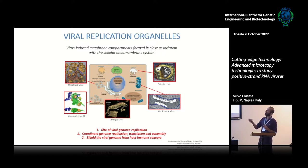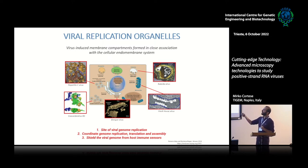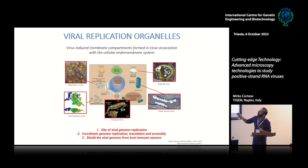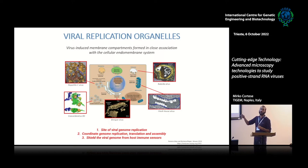Each virus has its own niche — a favorite place inside the cell to install its replication organelle. For instance, Flock House virus uses the mitochondrial membrane, Tombusvirus uses the peroxisome, and many human pathogens such as hepatitis C virus, flaviviruses like Zika and West Nile, and coronaviruses use the endoplasmic reticulum to create their replication organelles.